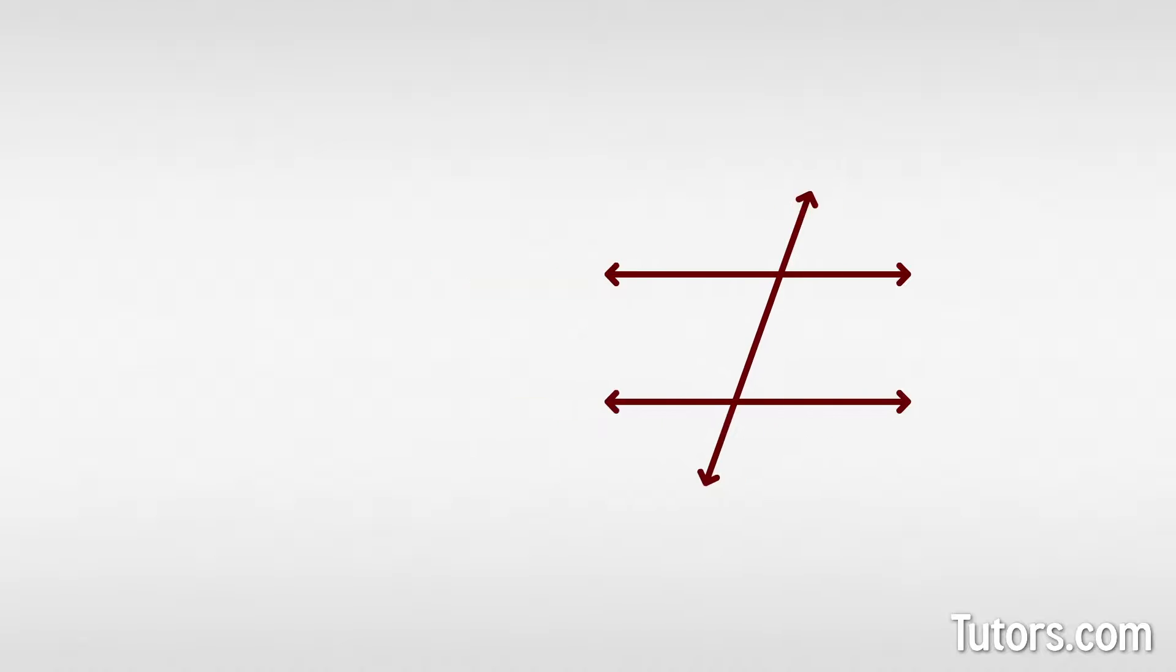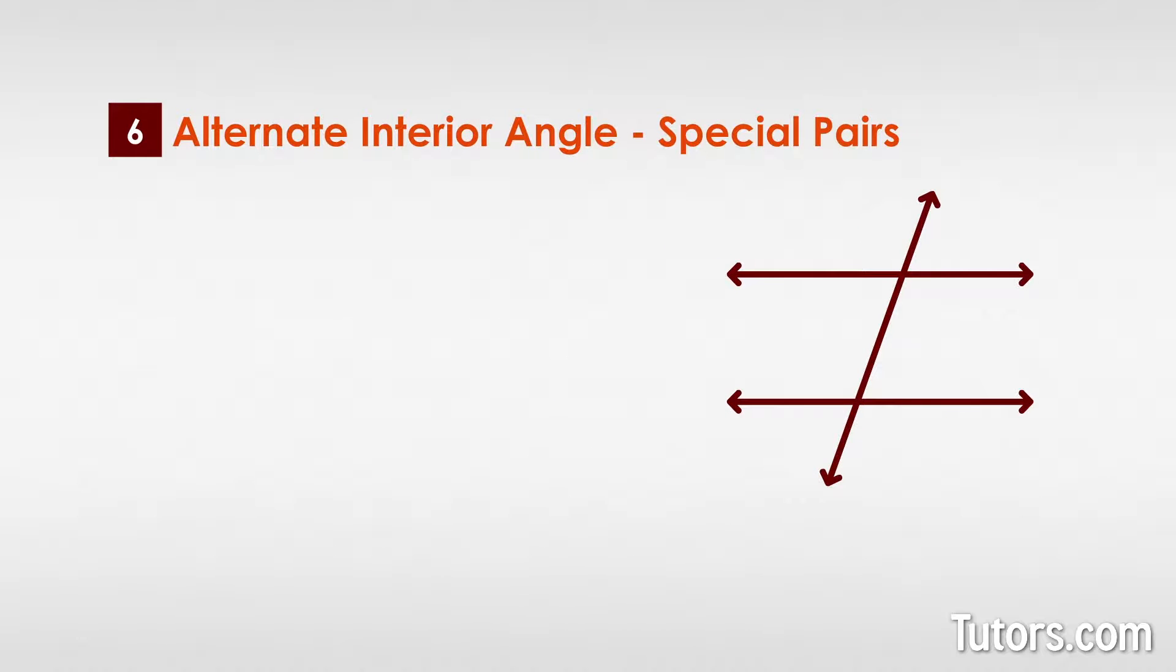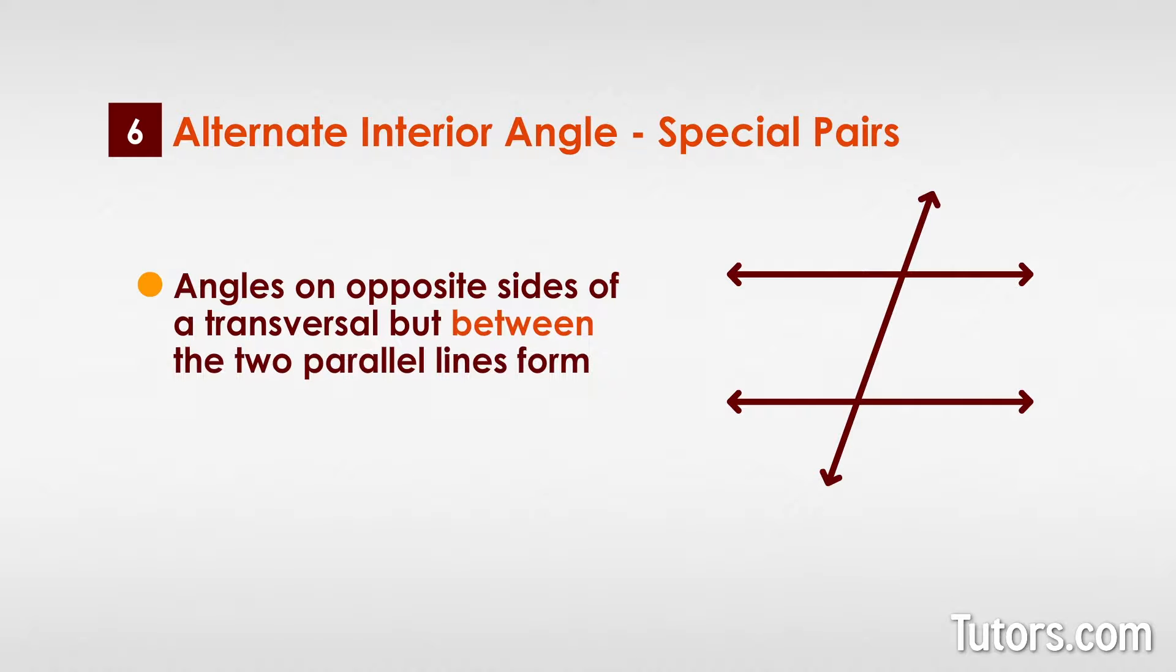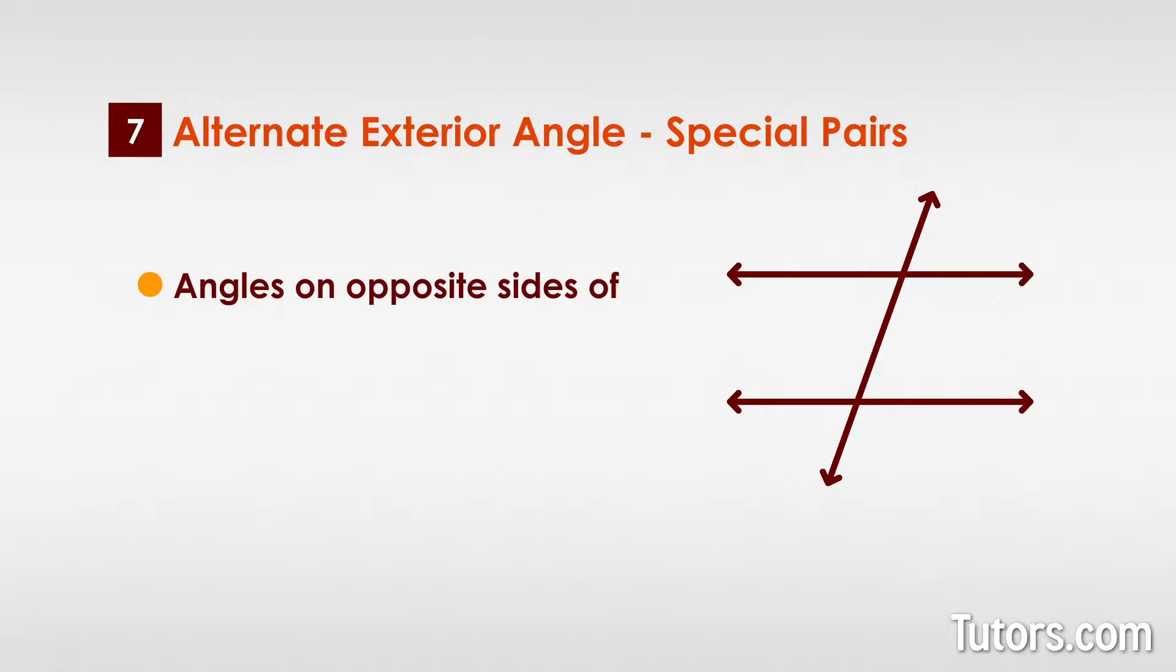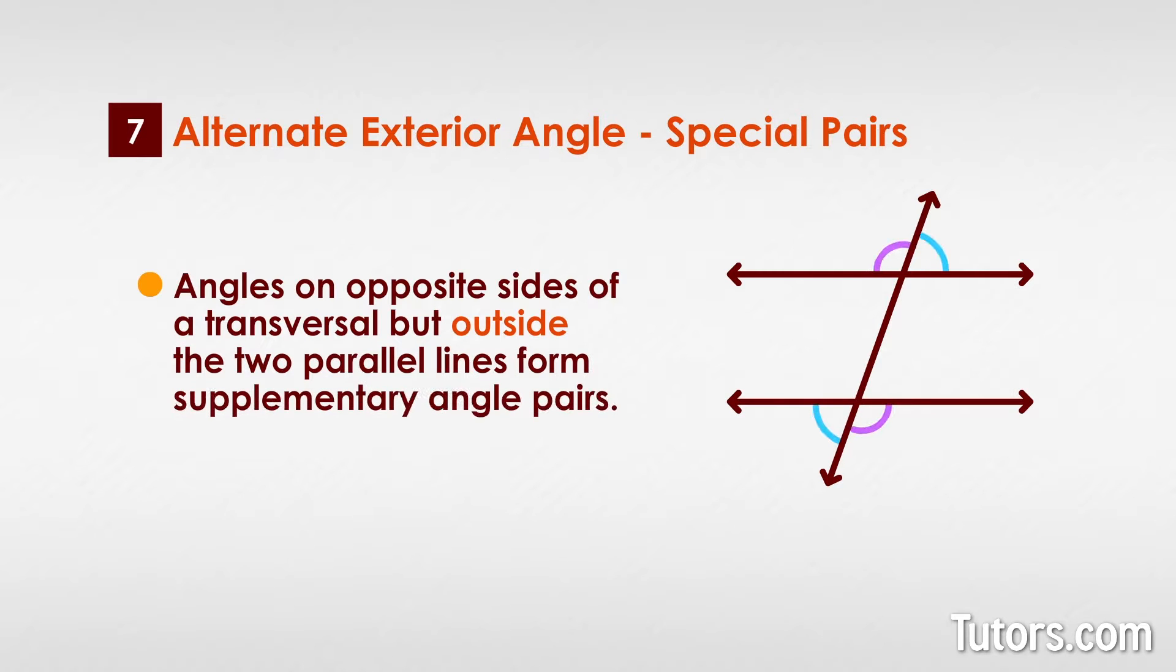These three pairs are alternate interior angles, angles on opposite sides of a transversal but between the two parallel lines forming supplementary angle pairs, alternate exterior angles, angles on opposite sides of a transversal but outside the two parallel lines forming supplementary angle pairs.